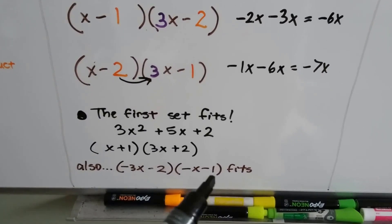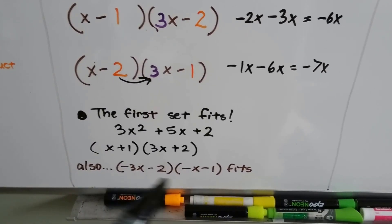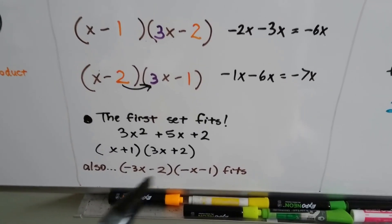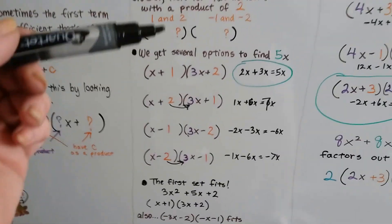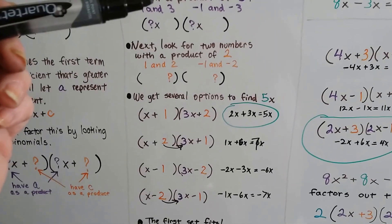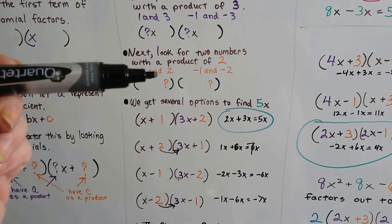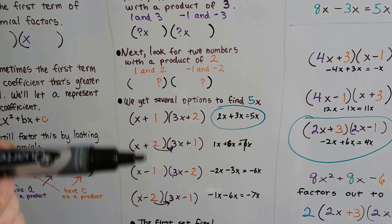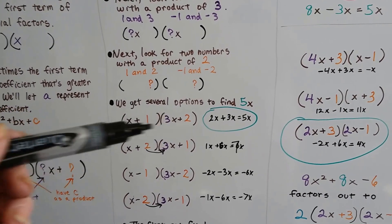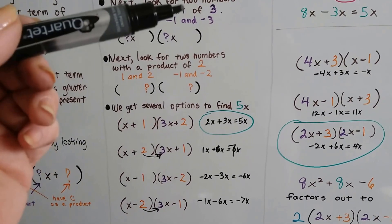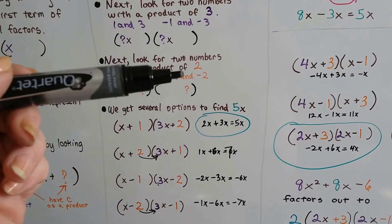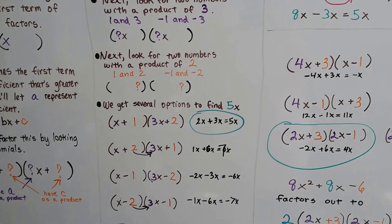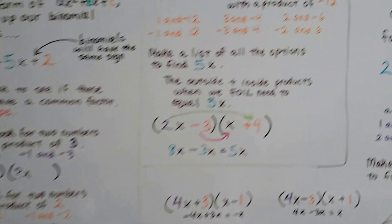We could have also used the negative versions — negative 3 and negative 1 and negative 2 and negative 1 — and that would have worked too since they make a positive. But we chose positives because they're easier to work with. So we go with 1 and 3 and 1 and 2 as positives, giving us 5x.